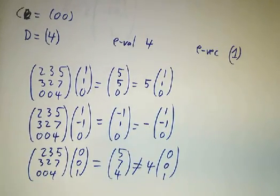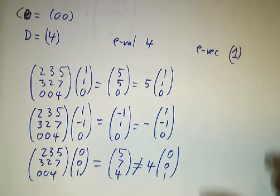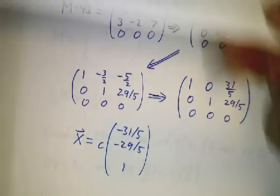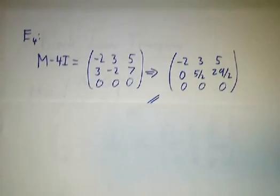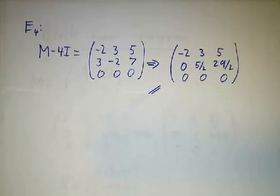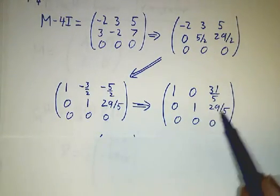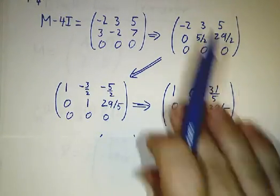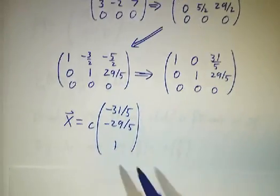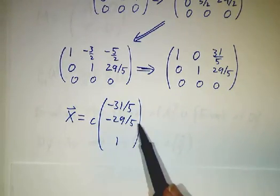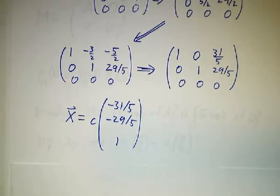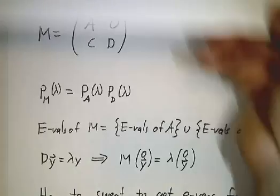So if you want to find the eigenvector with eigenvalue 4 — and there is one — you have to write down the matrix minus 4 times the identity, go through the whole row reduction process, and you end up with ugly fractions. You discover that the eigenvector is [-31/5, -29/5, 1]. Much harder. So it can be done, but it takes work.